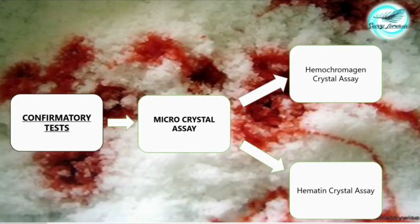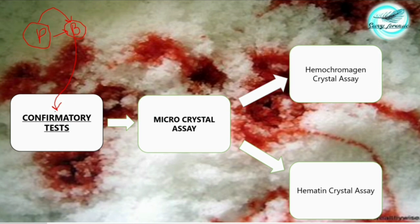Moving on: we have preliminarily identified a stain to be blood, but it is just a preliminary identification. We need a solid reason that this particular stain is blood, so we carry out a confirmatory test. Confirmatory tests are the final tests carried out on a particular biological fluid to confirm its identity - they confirm that this particular biological fluid is what we are expecting it to be.